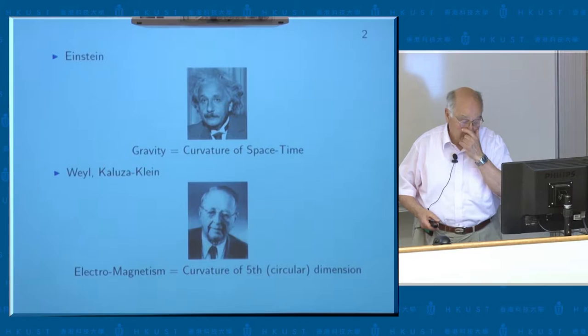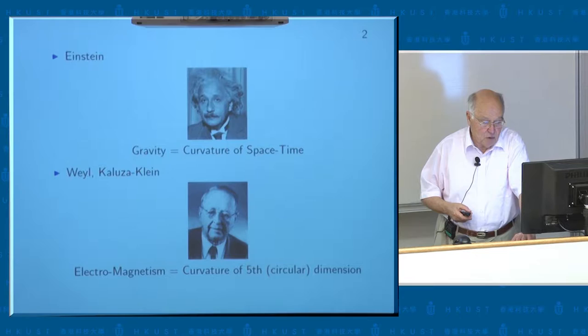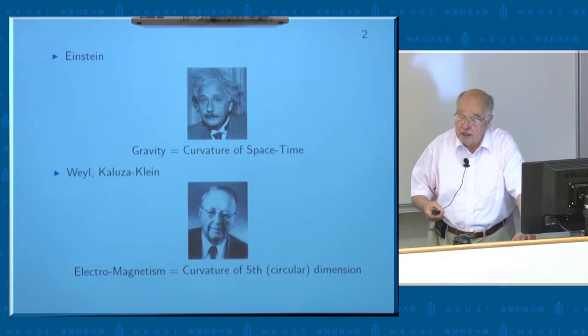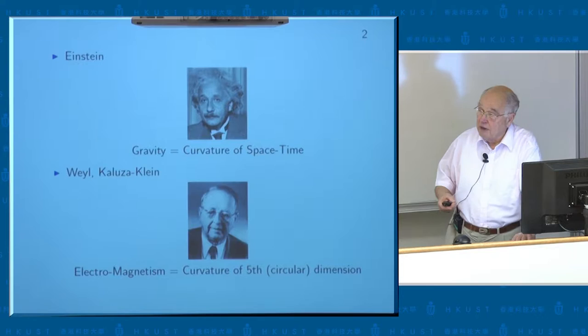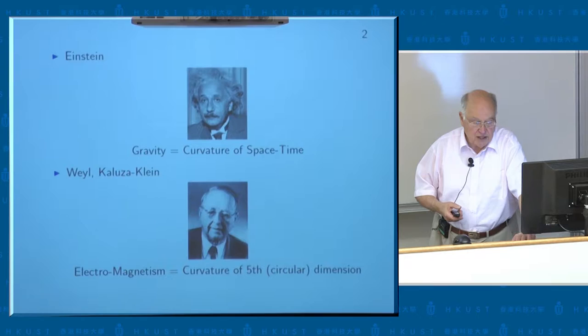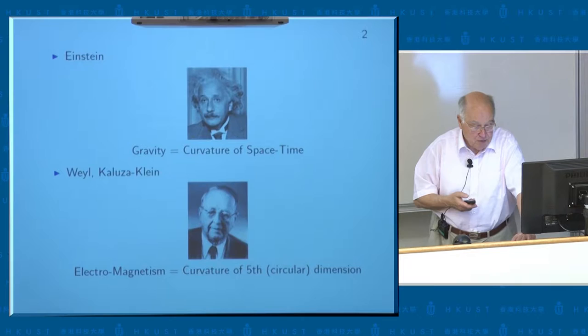After Einstein's theory of gravity, there was an interesting step developed by Hermann Weyl, a famous mathematician, and followed up later by Kaluza-Klein. What Weyl did, essentially, was to propose that you could understand electromagnetism — the theory given by Maxwell's equations — in a similar way to gravity, as a curvature of an extra dimension. So you have four dimensions of space-time, and if you imagine a fifth dimension, then the curvature from that direction could be interpreted as the electromagnetic field. It was a beautiful idea, and Weyl submitted the paper to a journal and they sent it to a referee, who was Einstein.